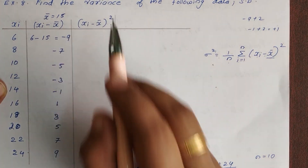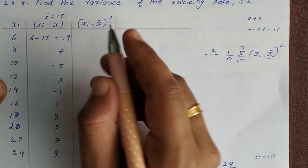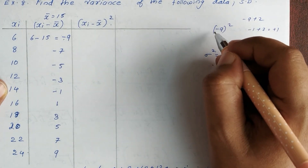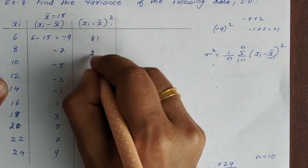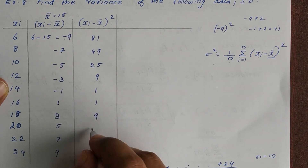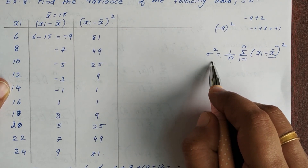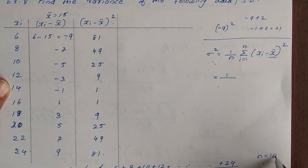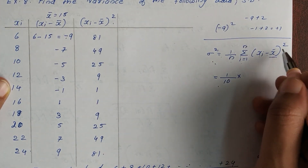The next step is to compute (xi minus x bar) the whole square. For example, minus 9 squared equals minus 9 times minus 9, which equals 81. The squared deviations are: 81, 49, 25, 9, 1, 1, 9, 25, 49, 81. The variance equals 1 by 10 into the summation of (xi minus x bar) the whole square.